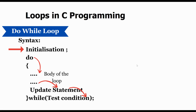To sum it up, loops are essential for automating repetitive tasks in programming. The for, while, and do-while loops provide different ways to achieve this based on your requirements. Now that you have a good understanding of loops, you can apply them in your programs. Thank you for watching this video, and if you liked it don't forget to subscribe to the channel.